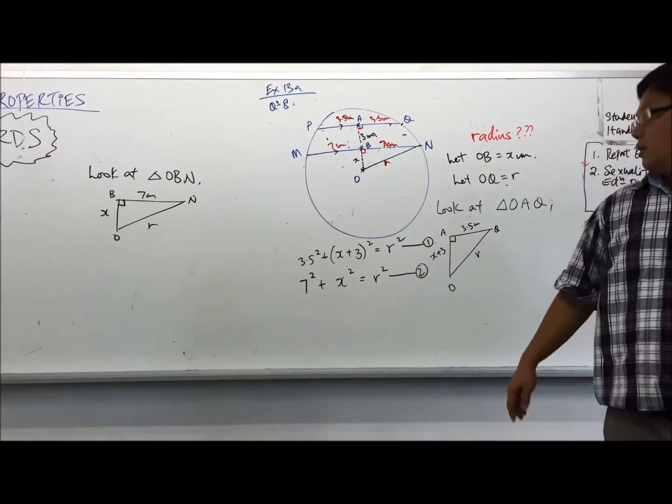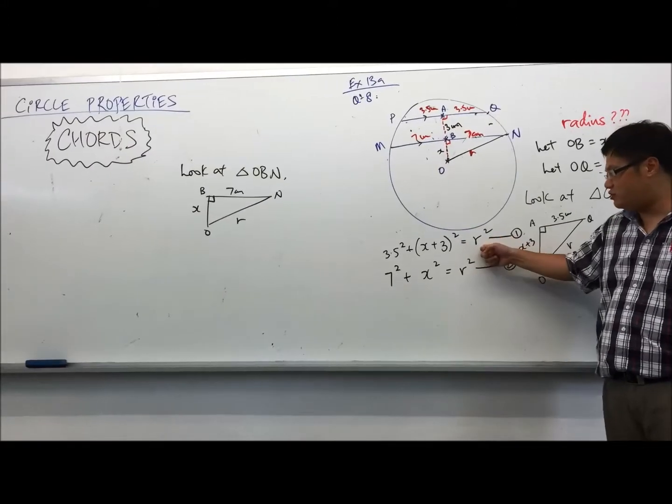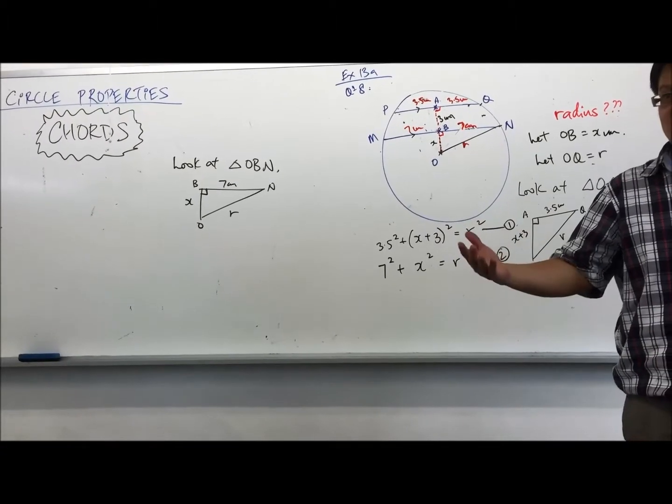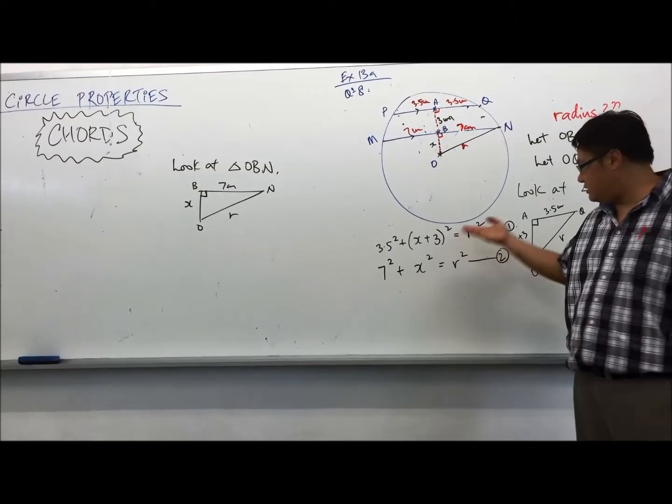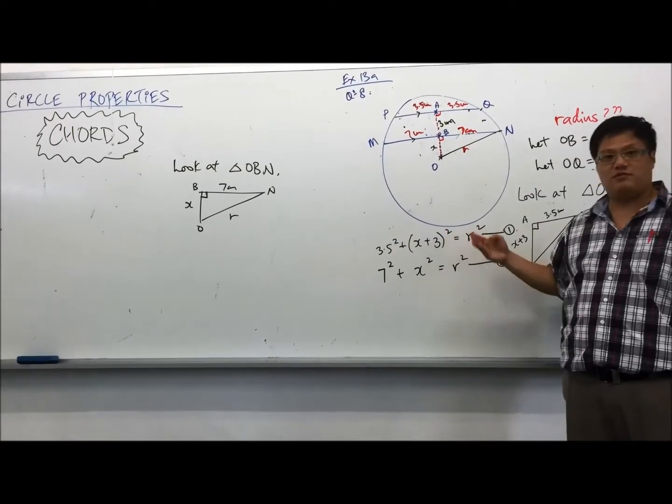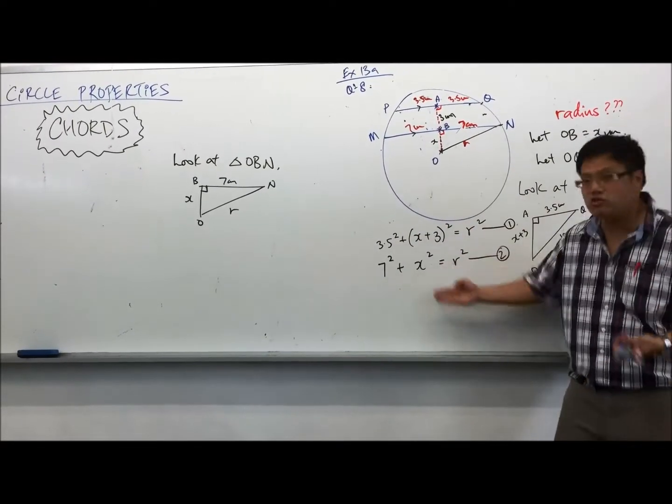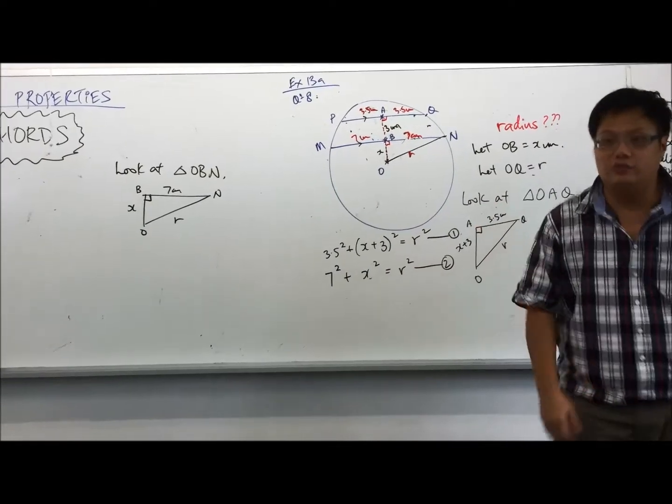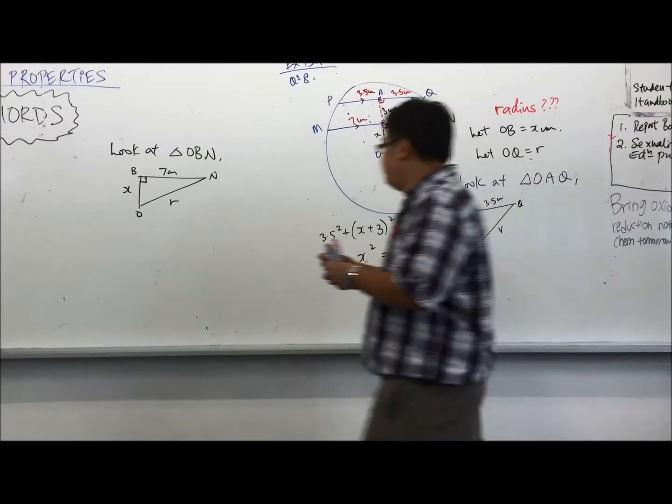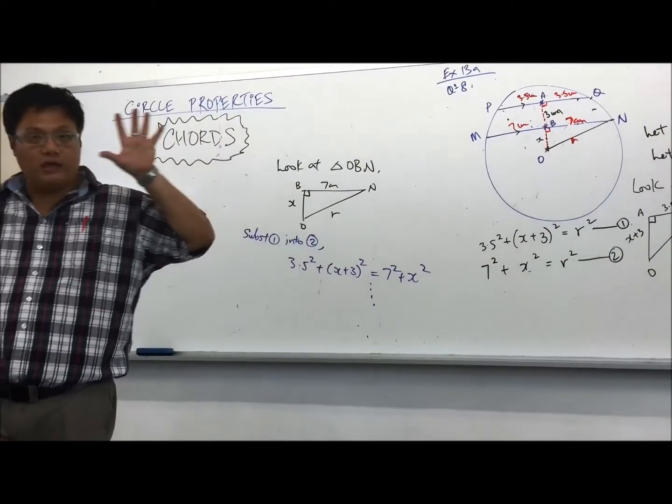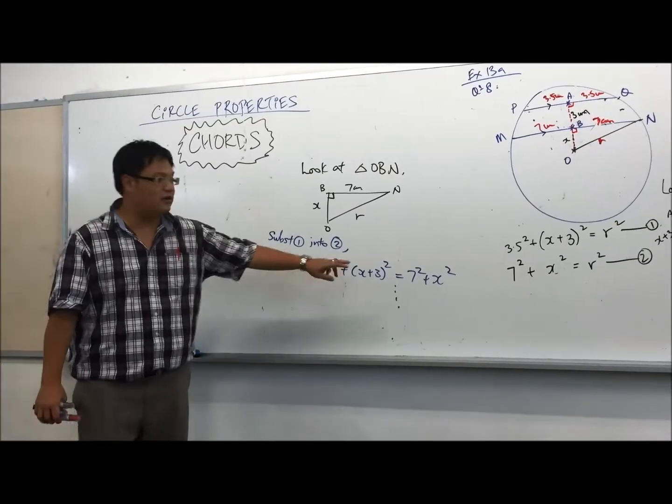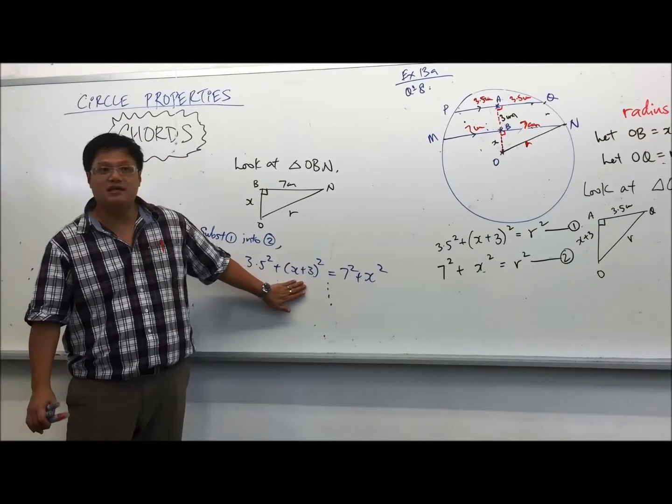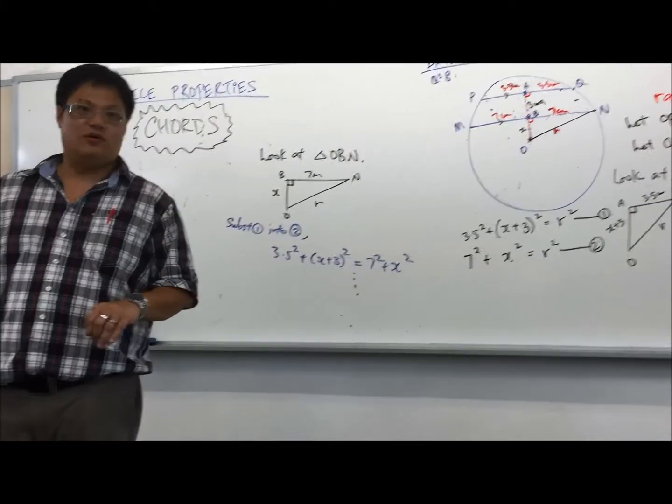Now, I want to ask you a question. Over here, I have r square. I have r square. What do you suggest that I do now? Substitute. Substitute, right? Simultaneous equation. Since 3.5 square plus x plus 3 square is r square, and r square is also equal to 7 square plus x square, I just equate them. Substitute equation 1 into equation 2. Now we only have one equation comprising of only one rule. In this case, it's x. Just go ahead, expand this, and then you solve it. By solving this equation, you expand the left hand side. You cancel off the x square. X square minus x square is 0. So we have x equal to 4.625.